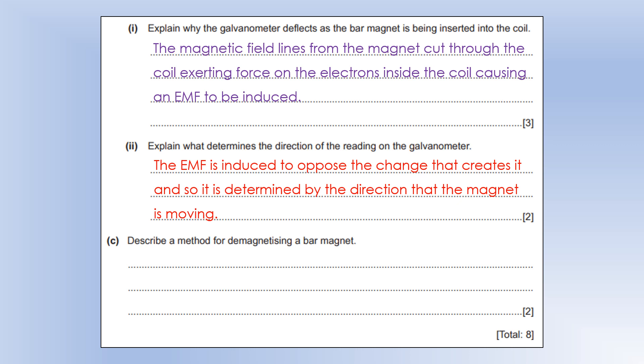Describe a method for demagnetizing a bar magnet. I would slowly remove it from a coil that has alternating current. Or, instead of moving the magnet, you could slowly decrease the size of the current. You could also hammer the magnet, or you could heat it. All of those three things would cause demagnetization.